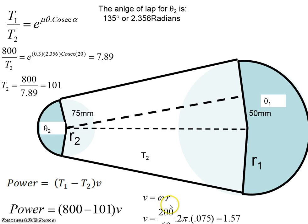V equals ω times R. Omega is 200 over 60 multiplied by 2π, times 0.075, which is 1.57 meters per second.